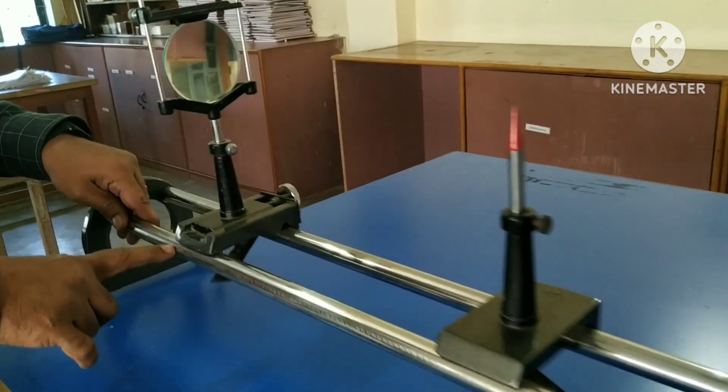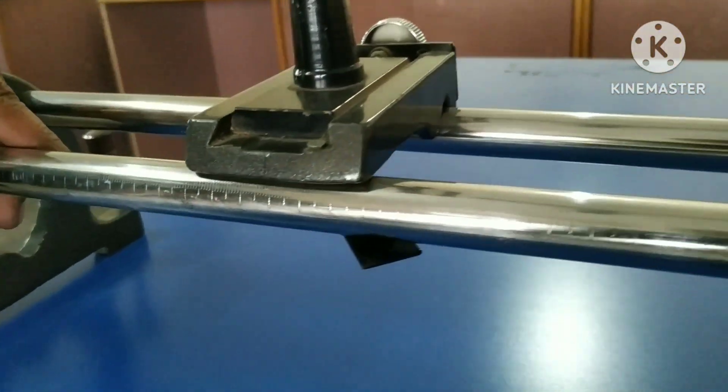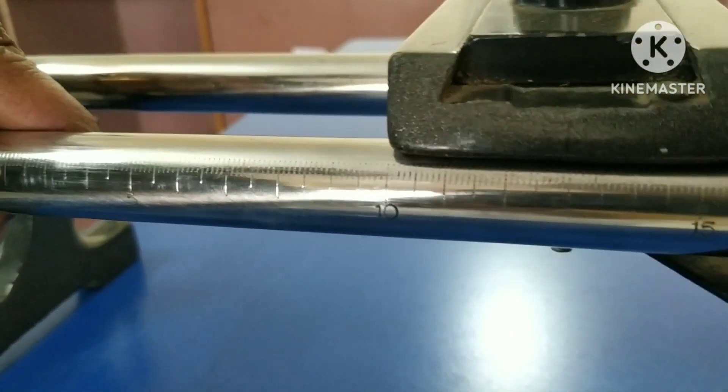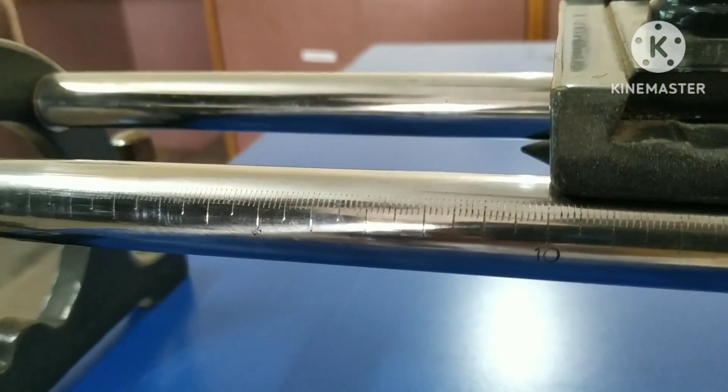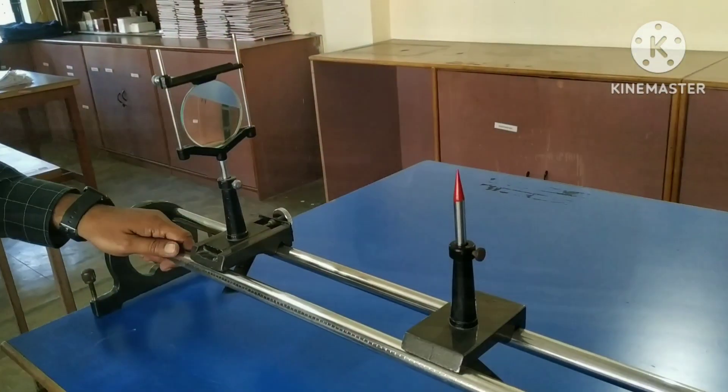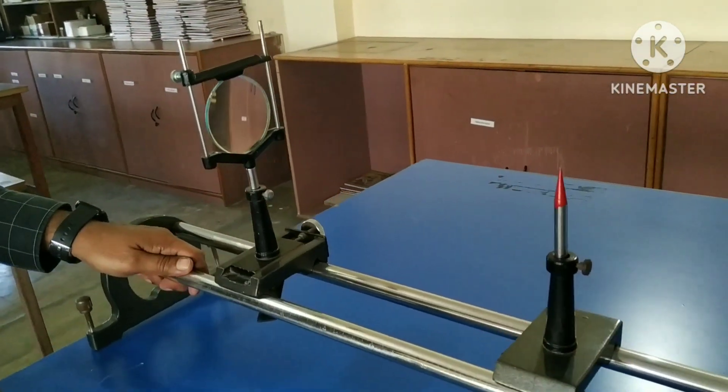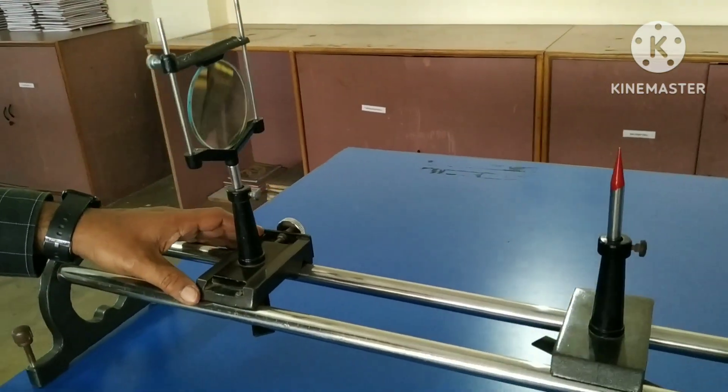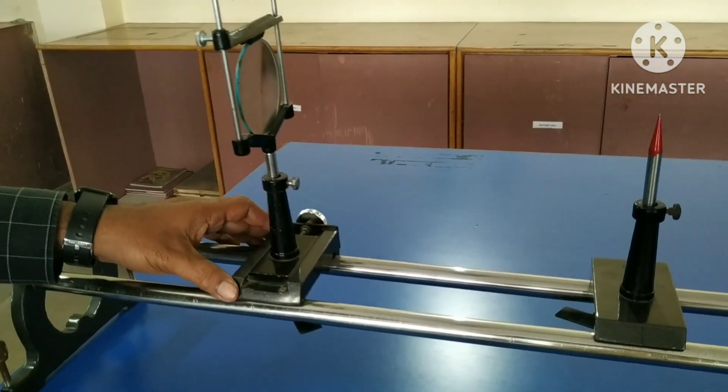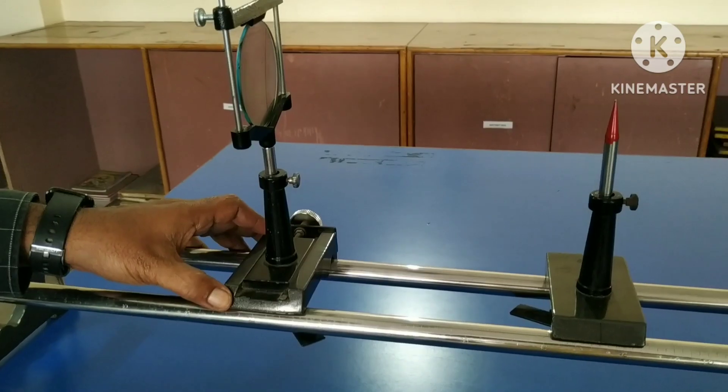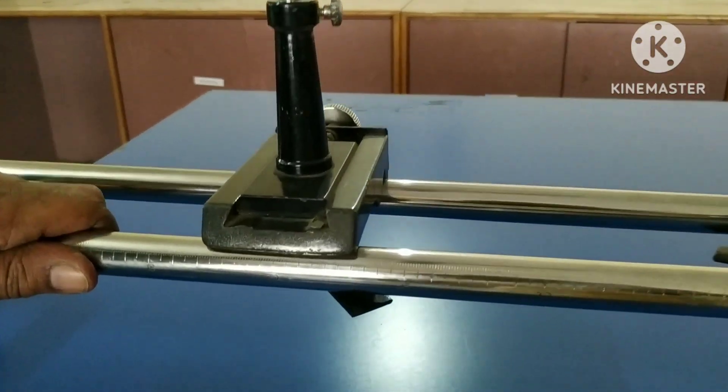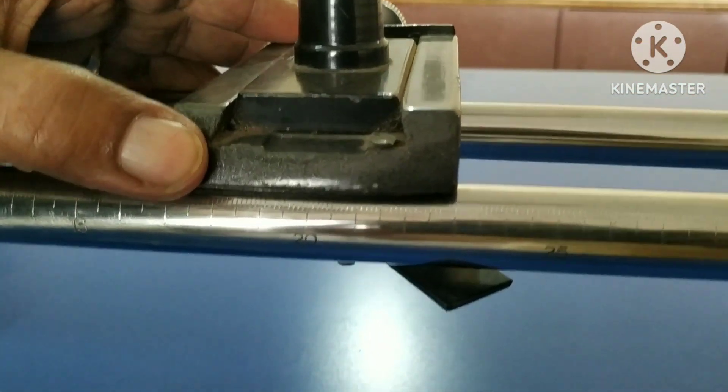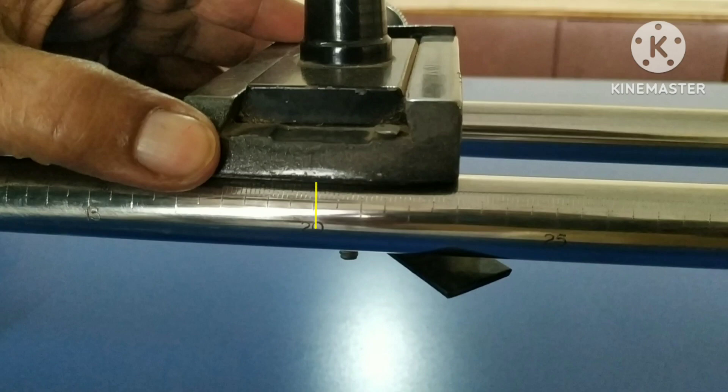On the rod, the scale is calibrated with a least count of 0.1 cm. To start with, we have to fix the mirror at a desired position. Here it is fixed at 20.0 cm mark. Please note it down.